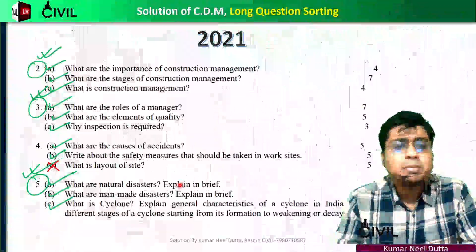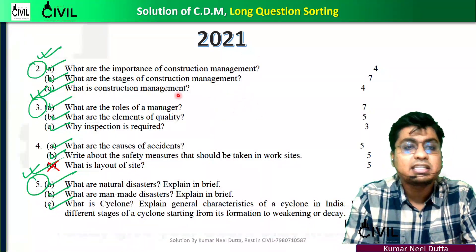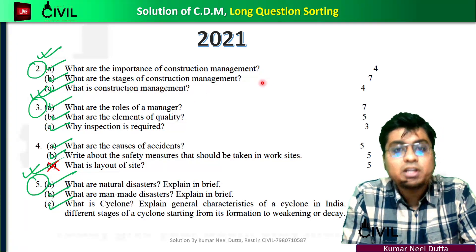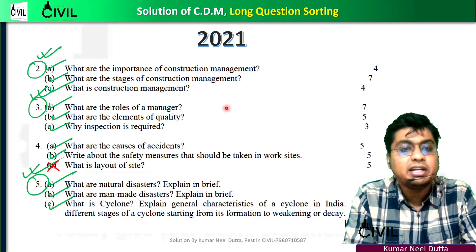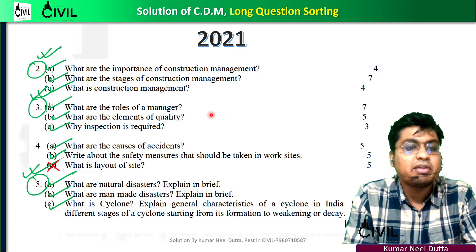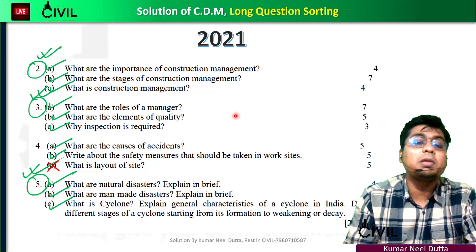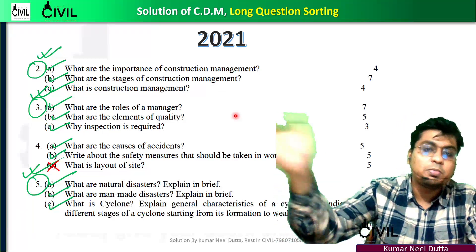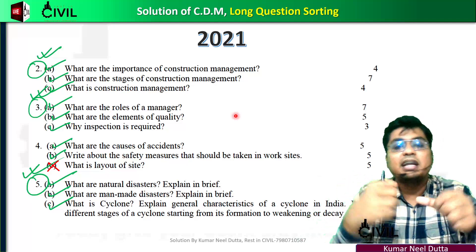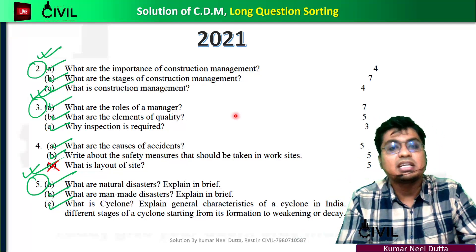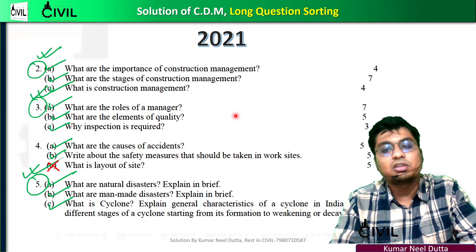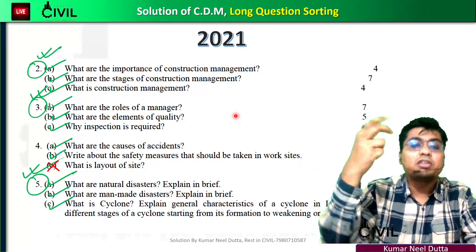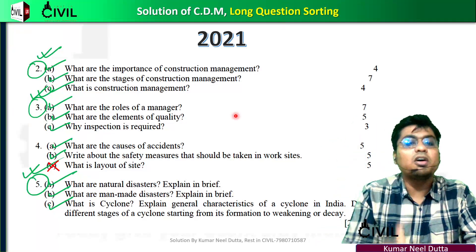We are going to talk about construction management: what are the stages of construction management, importance of construction. We are going to talk about roles of manager, elements of quality, why inspection is required, what are the causes of financial risk process strategies. There is emergency surge — this is the cause of the labor.